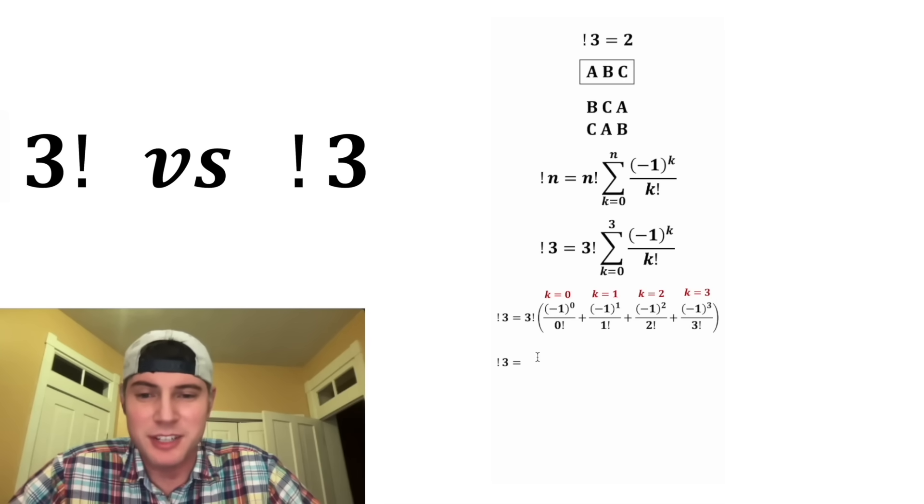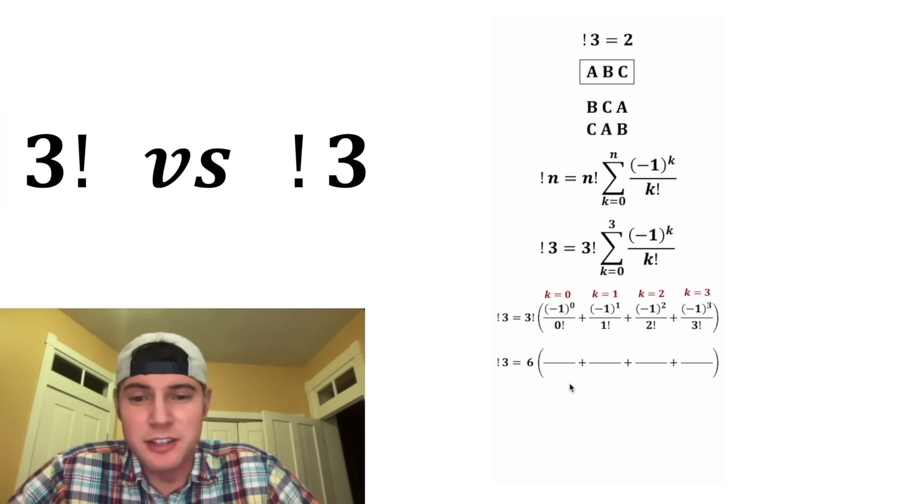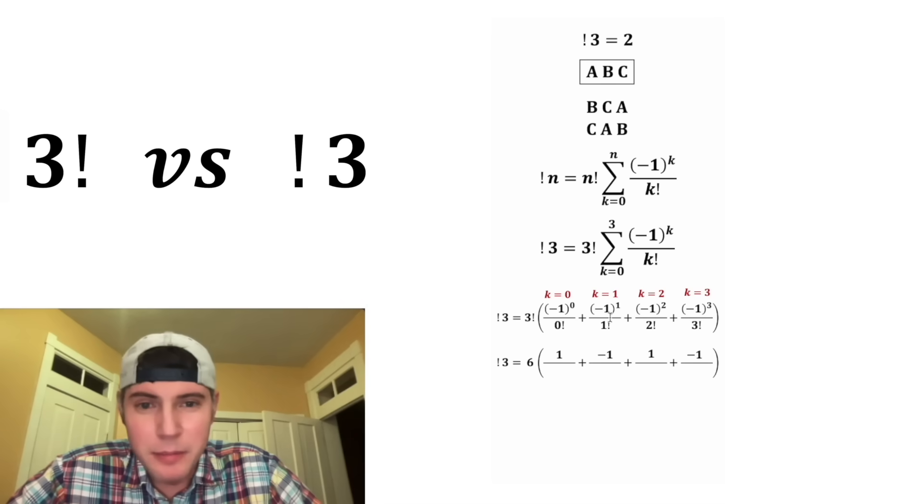If you remember, 3 factorial was equal to 6. And then for all this stuff in here, negative 1 to the 0, anything to the 0 is equal to 1. And then negative 1 to the 1 is going to be negative 1. And then negative 1 squared would be negative 1 times negative 1, which is 1. And then negative 1 cubed goes back to negative 1.